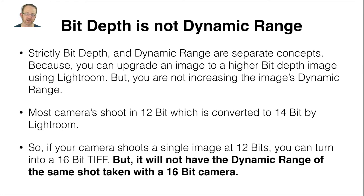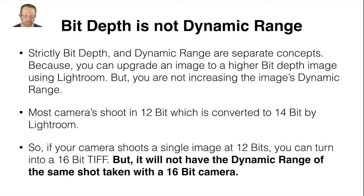Bit depth is not dynamic range. Strictly, bit depth and dynamic range are separate concepts because you can upgrade an image to a higher bit depth using Lightroom, but you are not increasing the image's dynamic range. You can take a 14-bit raw image inside Lightroom and output it as a 16-bit TIFF, but that's not increasing the dynamic range — it has the ability to show the dynamic range of a 16-bit image, but if you captured it with a 12-bit camera, you're not going to have a huge dynamic range. Most cameras shoot in 12-bit and it's converted to 14-bit by Lightroom, so if your camera shoots a single image at 12-bits, you can turn it into a 16-bit TIFF, but it will not have the dynamic range of the same shot taken with a 16-bit camera.